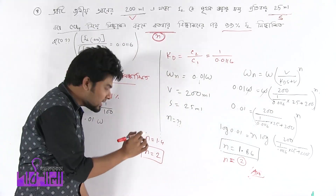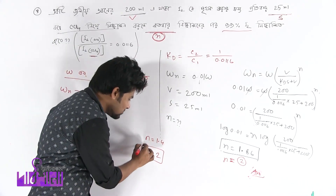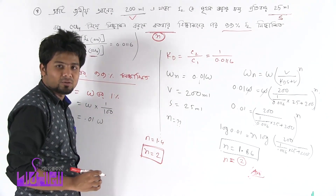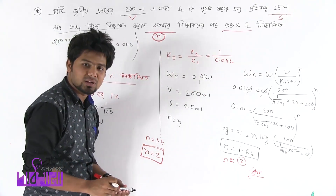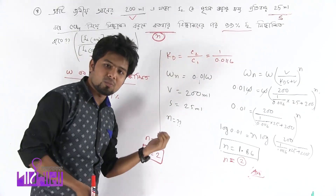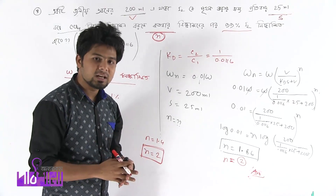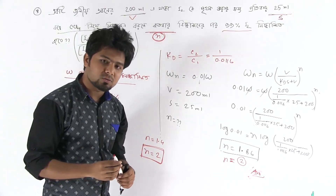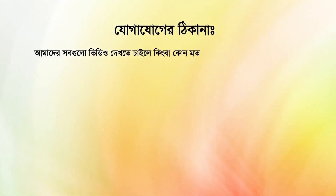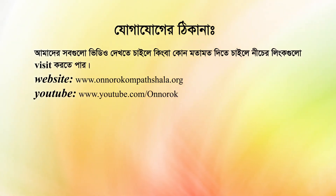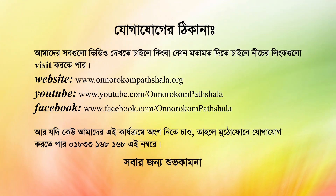আমি দুইবার। তো এবার যদি এনের ভেলুটা ধরো 1.4 — তো তখন কিং হবে? তো তখন কিন্তু আমাকে দুইবারই নিষ্কাশন করতে হবে — এরকমভাবে নিং নিং নিং করে দেওয়া।